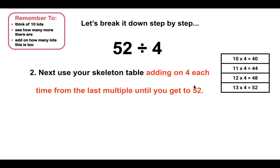Next, we need to use our skeleton table, adding on 4 each time from the last multiple until we get to 52. So I've got my 10 lots of 4 here, which is 40. I'm then going to add 4 on each time until I get to 52: 40, 44, 48, 52.